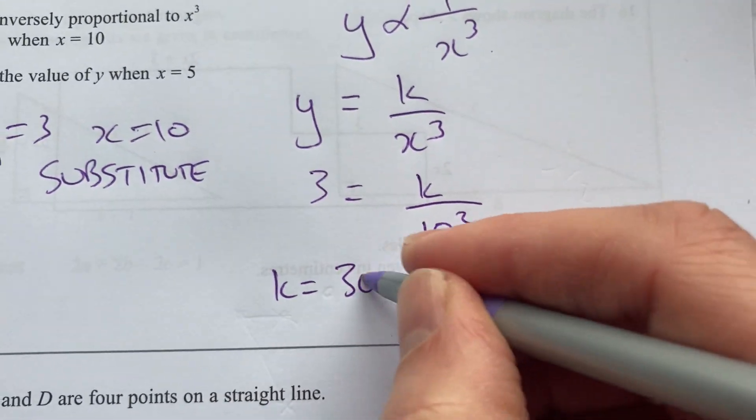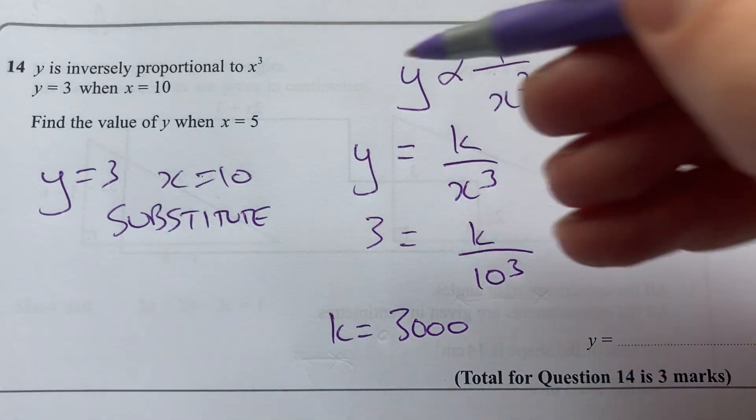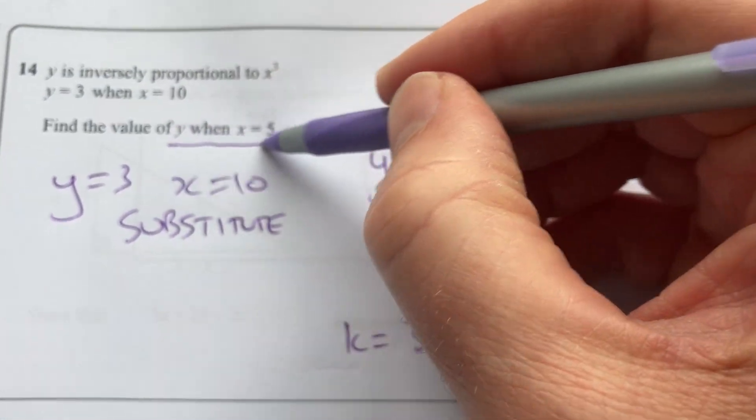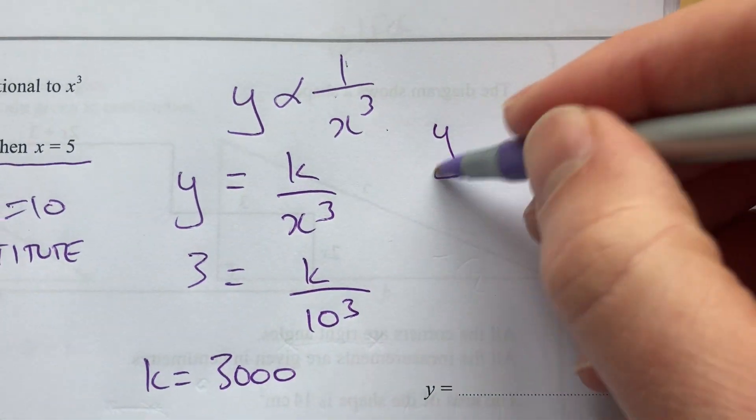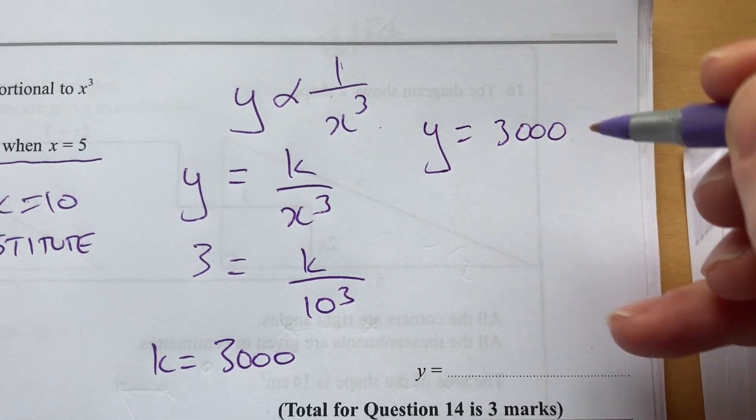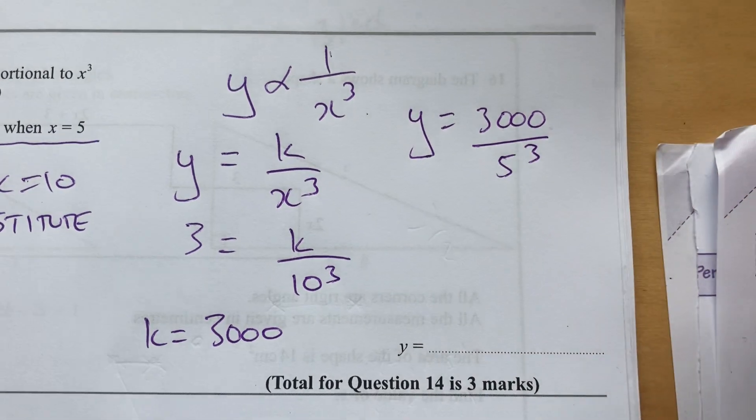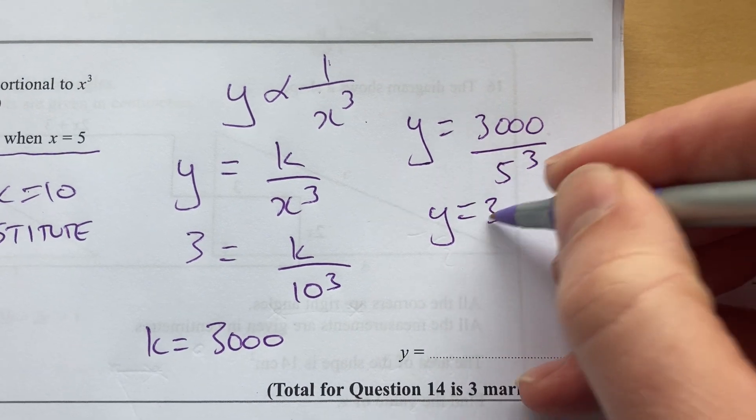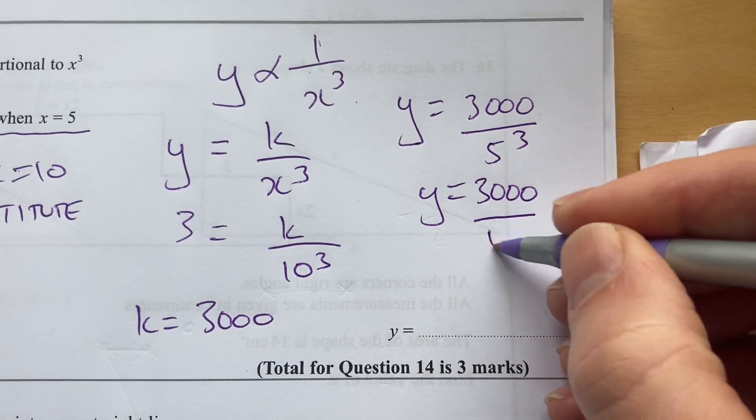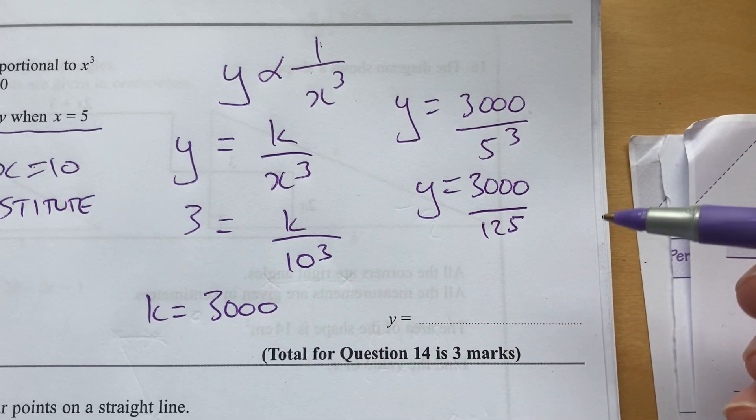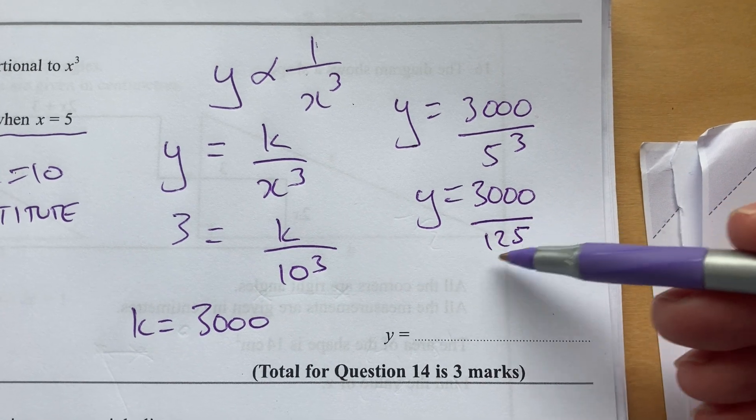Now I can go find the value of y when x is 5. So y equals 3000 over 5 cubed. So y equals 3000 over 125. It's a non-calculator paper.